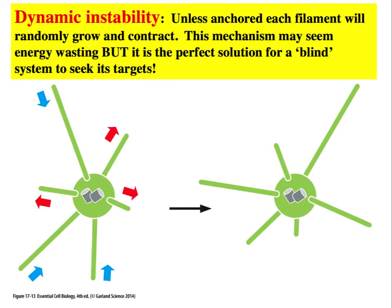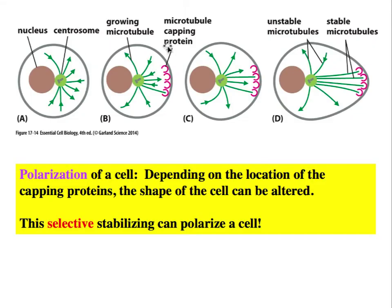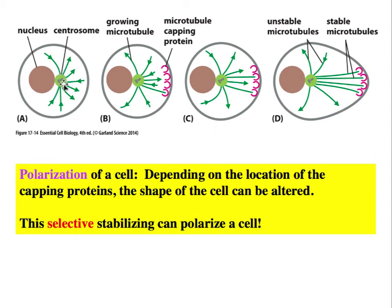Once microtubules attach to something, they become stabilized by microtubule capping proteins, or by structures on the centromeres of chromosomes. If one side of the cell deposits capping proteins, wandering microtubules are captured and stabilized, automatically polarizing the cell and pushing its apex forward. The centrosome is normally positioned on one side of the nucleus, so cells are polarized depending on the position of their centrosome.